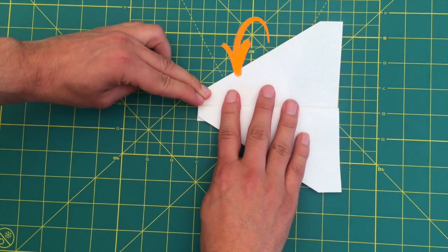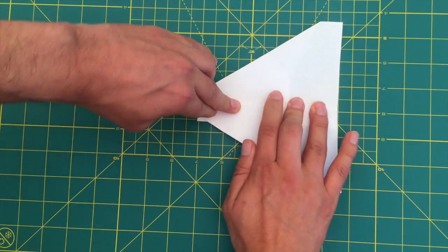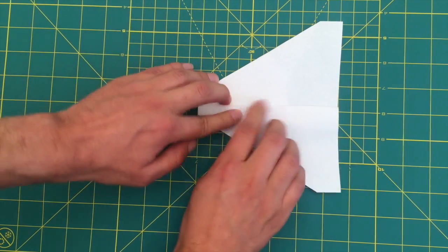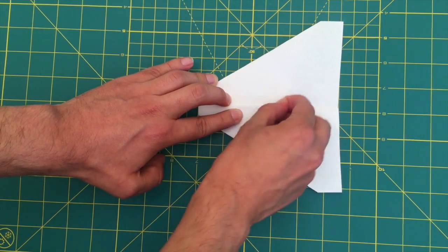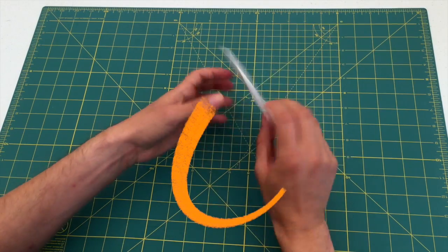Fold the wing down on the exposed side like so. Make sure to crease thoroughly. Don't forget to use that fingernail! Once you've finished creasing, it's time to flip over the model.